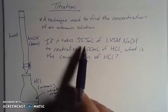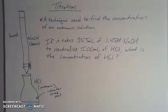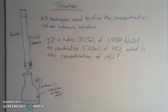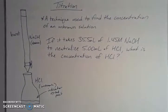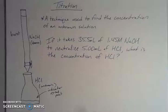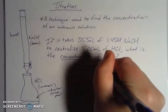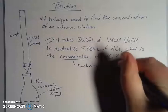We can solve problems like this: if it takes 35.5 milliliters of 1.54 molar sodium hydroxide to neutralize 5 milliliters of HCl, what is the concentration? The sodium hydroxide in the burette has a concentration of 1.45 molar — that means 1.45 moles of sodium hydroxide per 1 liter of solution. If it takes 35.5 mL of that to neutralize 5 mL of HCl, I need to find the concentration. Concentration here is molarity — moles of solute per liter of solution.